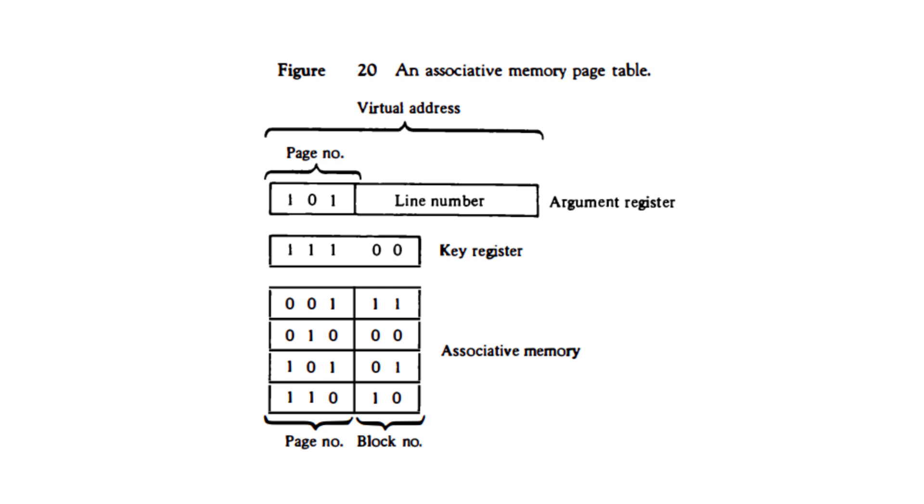From there, you can select one of the matching words using a priority encoder if there are multiple matches, and read its contents. The location gets returned and the data can be accessed.